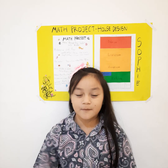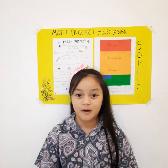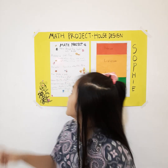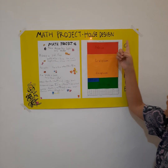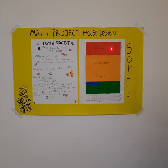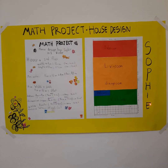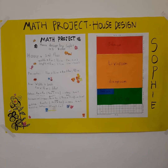Hi, my name is Sophie. I am from Great Street Colour. Today for my math project, I'm going to present math project house design, which is about area and perimeter, made by Sophie.